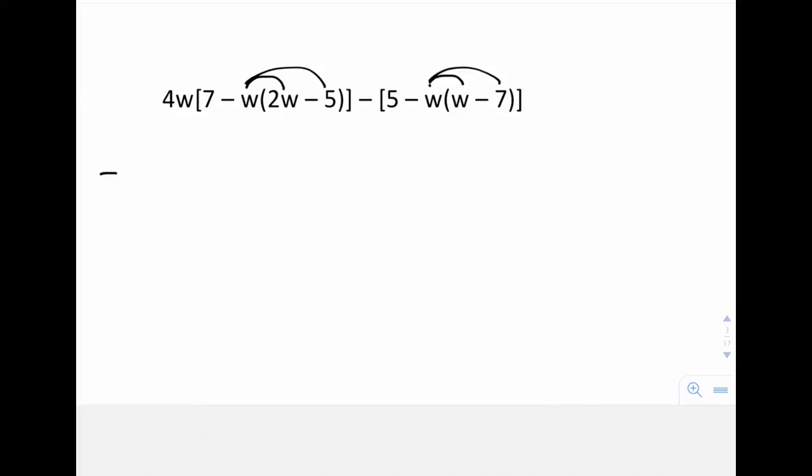So let's take a look. I have 4w open bracket 7 and then minus 2w squared plus 5w, close that set of brackets, and then a minus. I have 5 again minus w squared plus 7w.